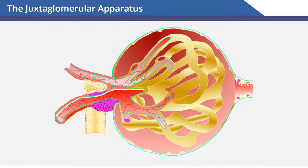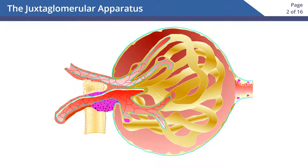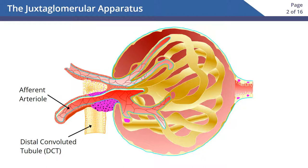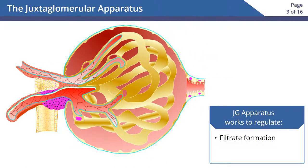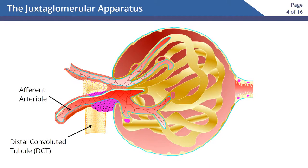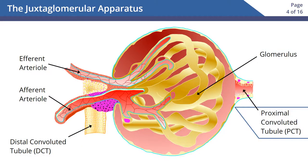Welcome to the juxtaglomerular apparatus. The juxtaglomerular (JG) apparatus is a specialized region of a nephron where the afferent arteriole and the distal convoluted tubule (DCT) come into direct contact with each other. The JG apparatus works to regulate filtrate formation and systemic blood pressure. In this diagram we can see the efferent arteriole, afferent arteriole, DCT, glomerulus, and proximal convoluted tubule.